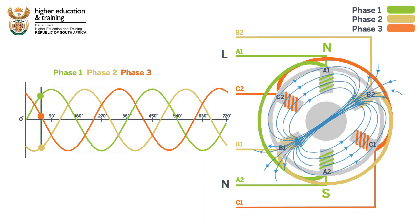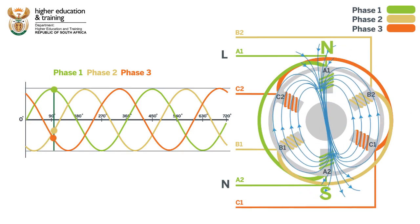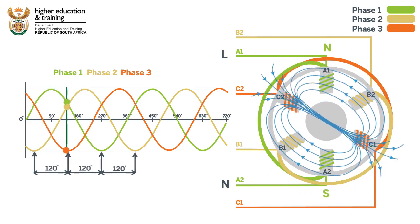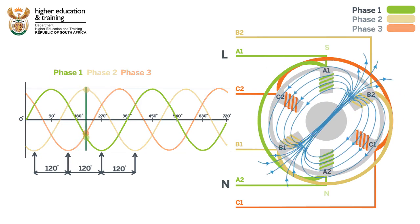We saw with the three-phase motor that the three phases being out of phase by 120 degrees produces a rotating magnetic field.